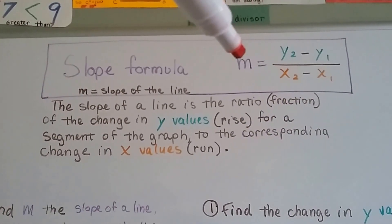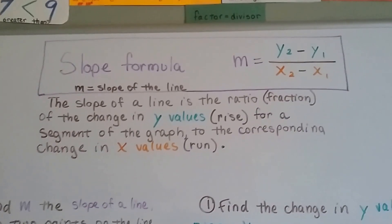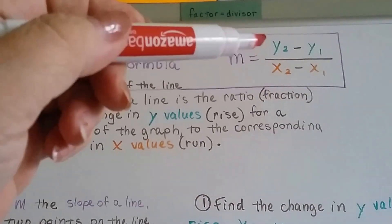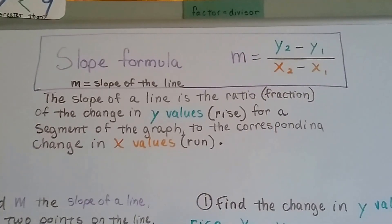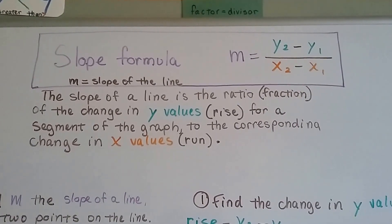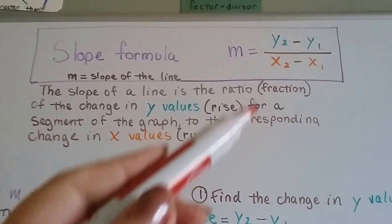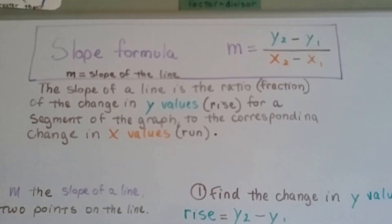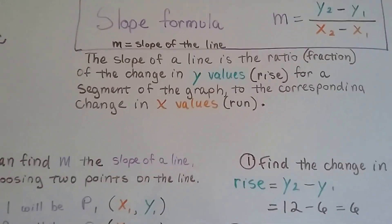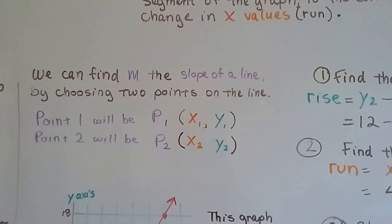And this m means the slope of the line. The slope of the line is the ratio, it's a fraction. And it's the change in y values, the rise, for a segment of the graph to the corresponding change in the x values, the run. So the y is the rise and the x is the run. You're going to hear rise over run, rise over run. And now you're going to know what it means.